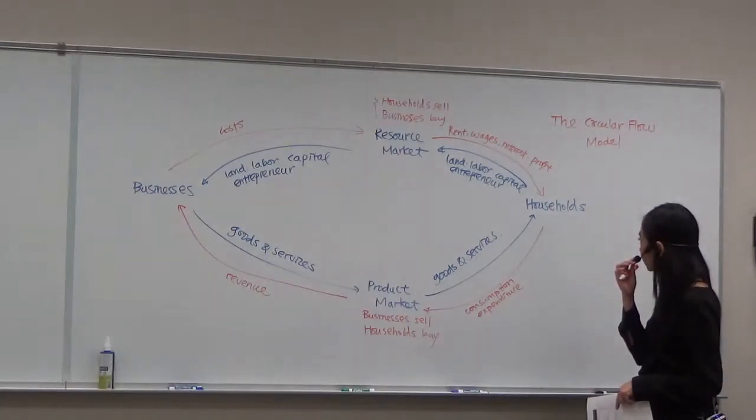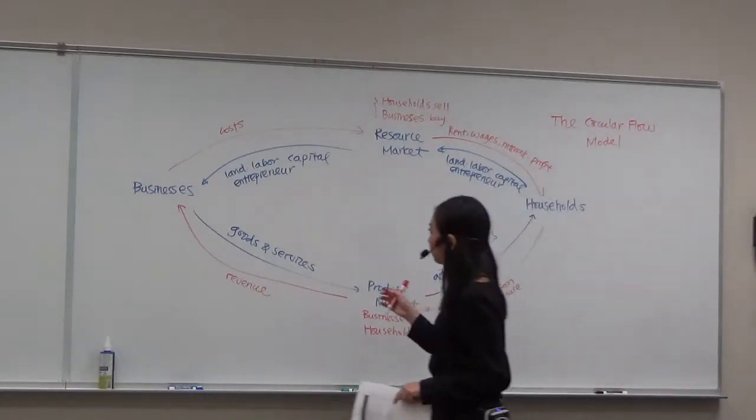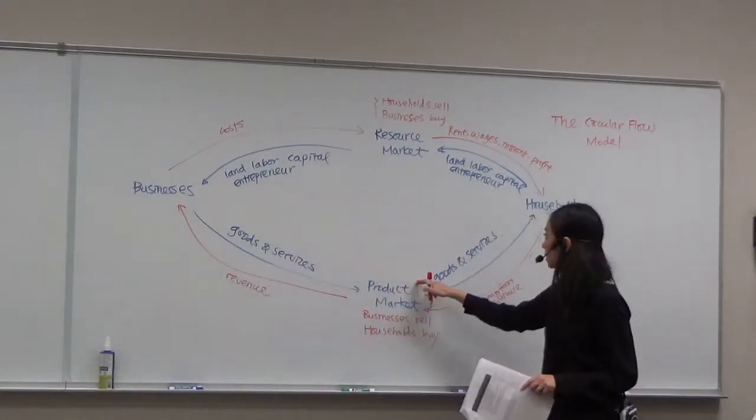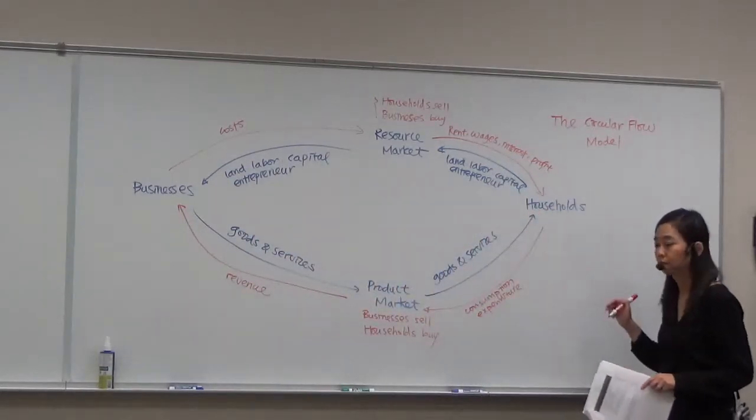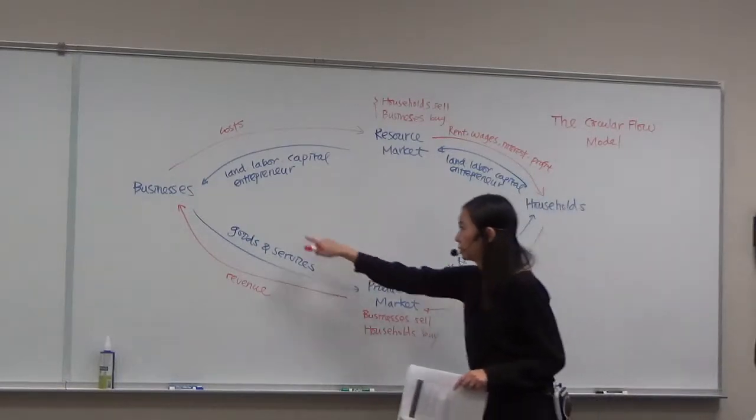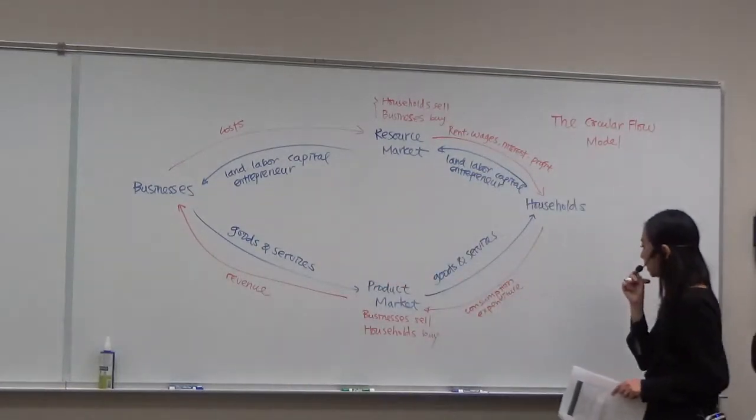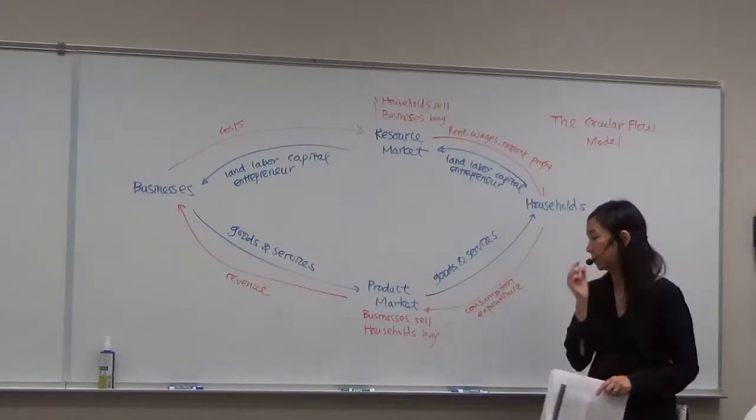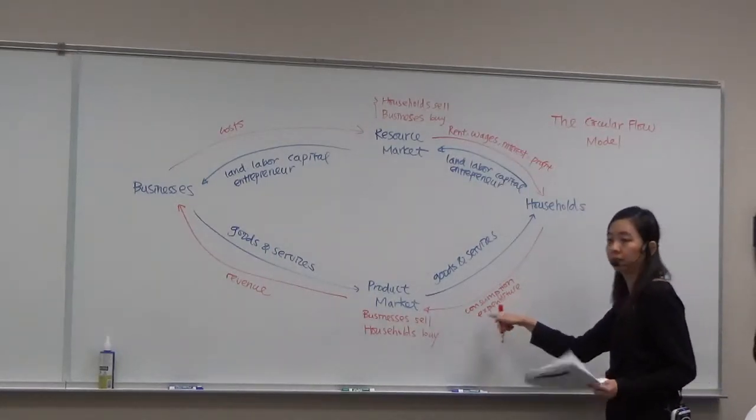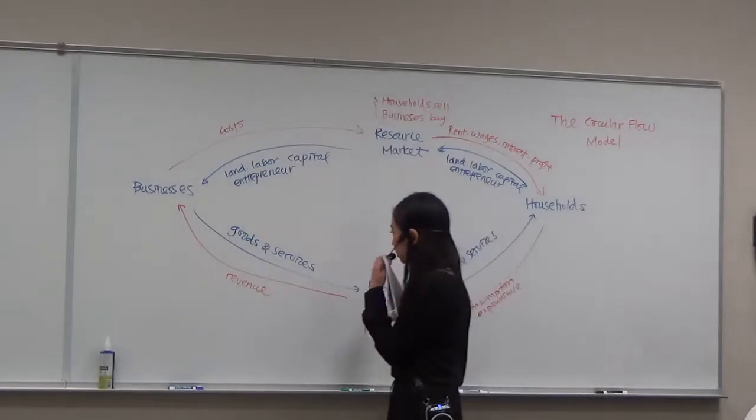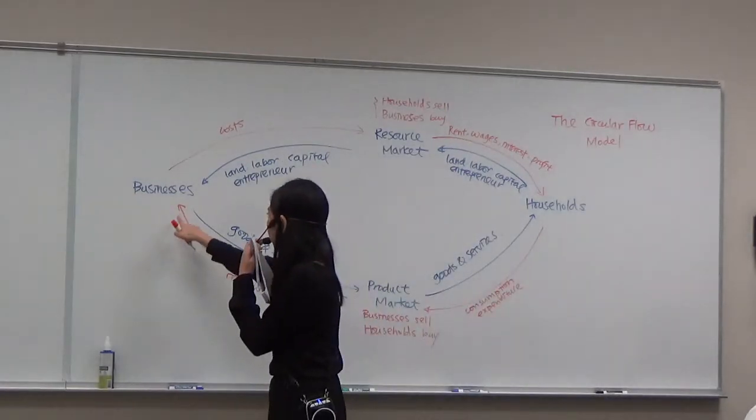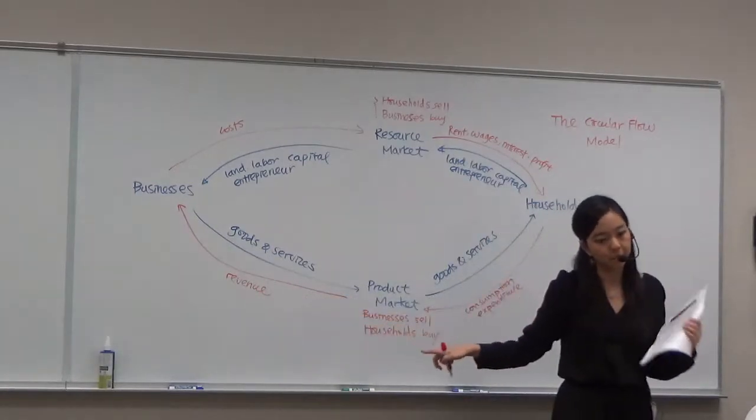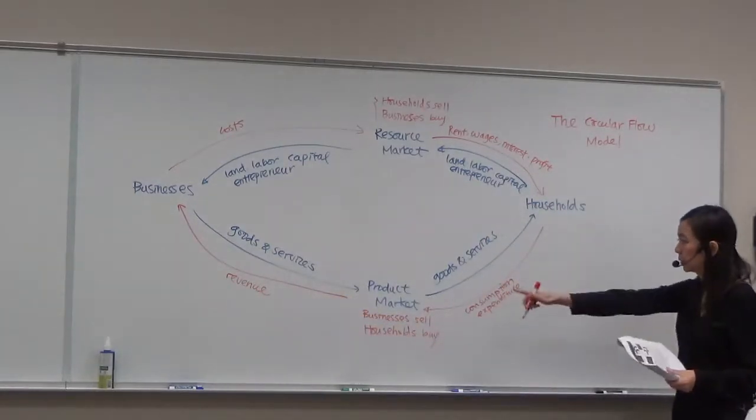We can see goods and services flow from businesses through the product market to households. In return, households have to pay through consumption expenditure. The money flows this way and becomes the revenue of businesses. That's the product market.